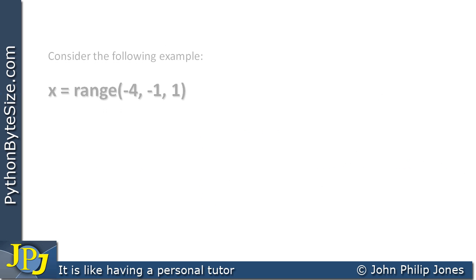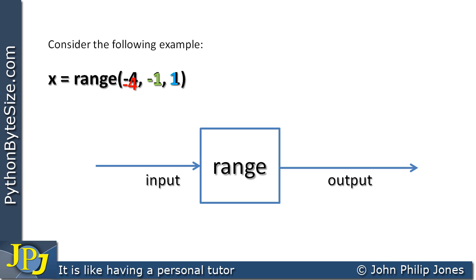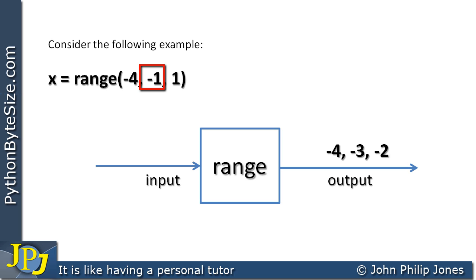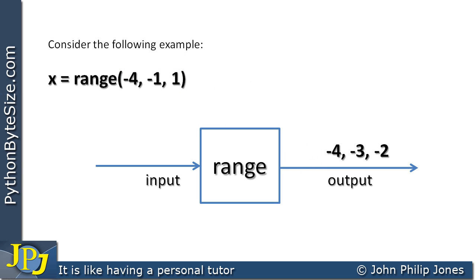Another example: x is assigned range(-4, -1, 1). We pass in -4 as the start, -1 as the stop, and 1 as the step. The output is -4, -3, -2. We get -4 because that's the start value, then go to -3 because the step is +1 (minus 4 plus 1 equals minus 3), then add 1 to get -2. We don't go further than -2 because the stop value is -1. This result is now bound to the variable x.